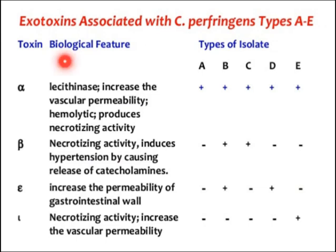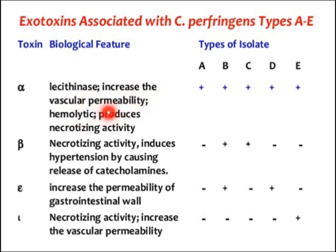The most important toxin is alpha toxin, which is present in Clostridium perfringens types A, B, C, D, and E. Alpha toxin produces hemolysis and necrotizing activity — that is, it causes necrosis of tissue. Along with this, gas formation occurs, which is why we call this condition gas gangrene.